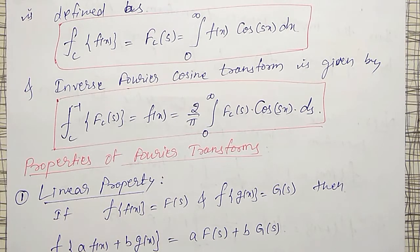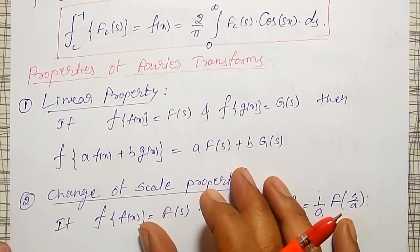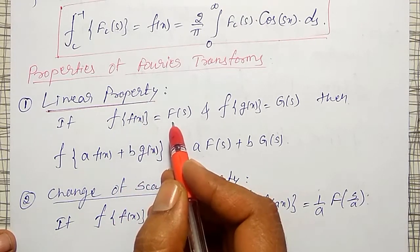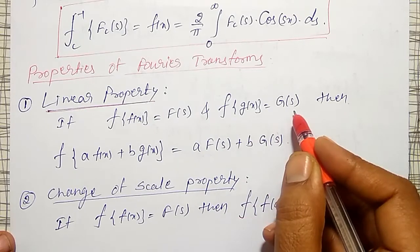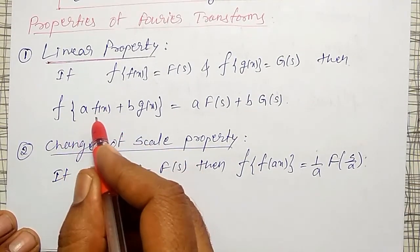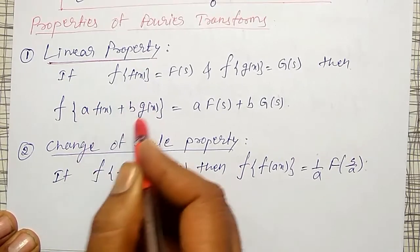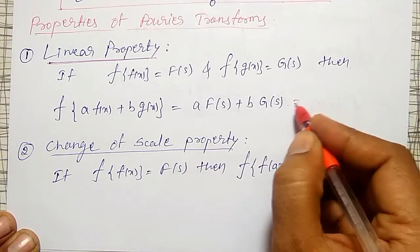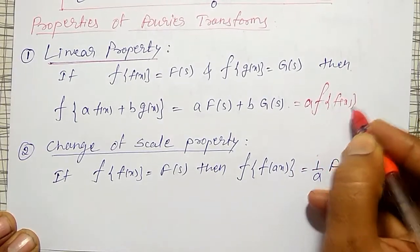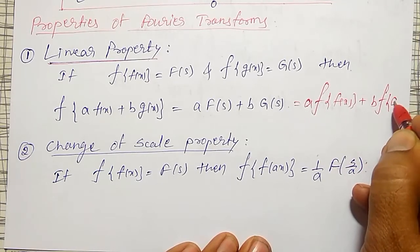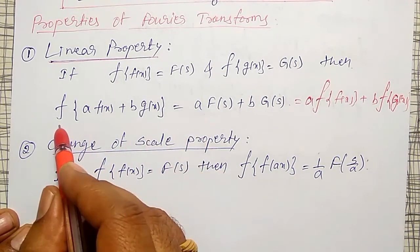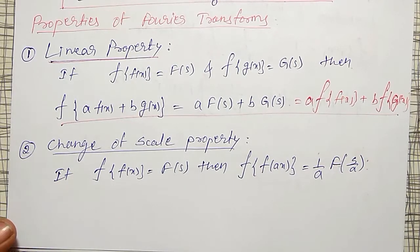Whenever transforms are there, they should have some properties. The first property holds good for all transforms, that is the linear property. The linear property is given by: if the Fourier transform of f(x) is equal to capital F(s), and Fourier transform of g(x) is equal to capital G(s), then the Fourier transform of a·f(x) + b·g(x) can be separately calculated as a·F(s) + b·G(s).